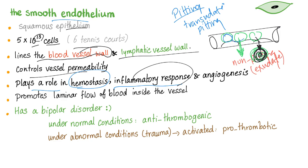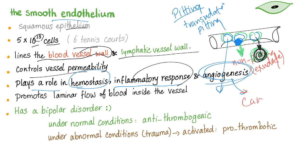Similarly, platelets roll over the endothelium, and when they find an injury, they adhere and form a clot. They call the coagulation factors to lay a fibrin meshwork so red blood cells become trapped — forming a strong plug to prevent bleeding. The endothelium also helps with angiogenesis — blood vessel formation — which is part of the pathophysiology of cancer.